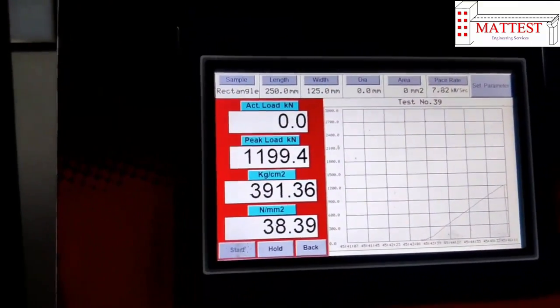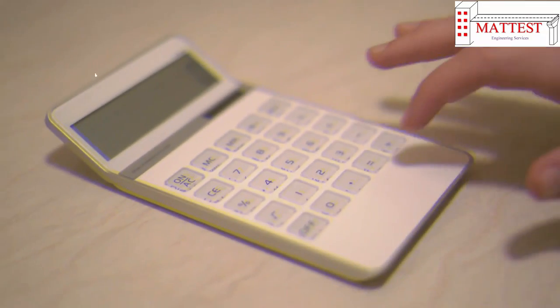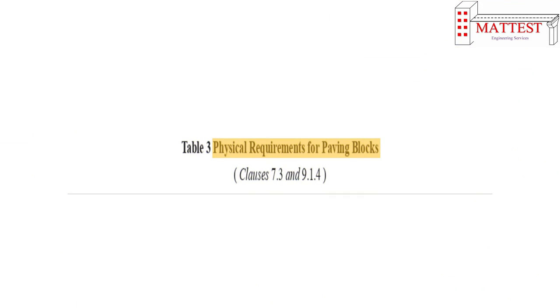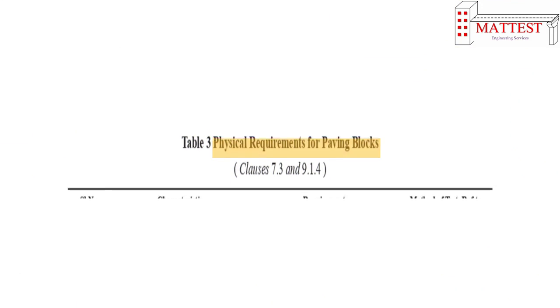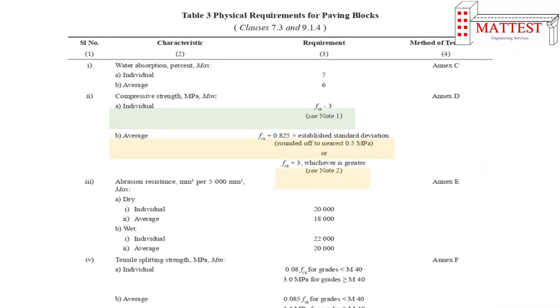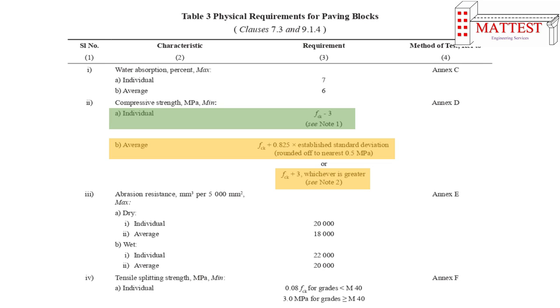After failure of the specimen, the maximum load applied to the specimen shall be noted in Newtons. Now calculate the compressive strength of paving block as per IAS 15658-2021. The required compressive strength for concrete paving block is: for individual minimum 3 FCK, for average minimum FCK plus 0.825 times the established standard deviation.